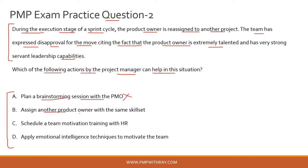Option B: assign another product owner with the same skill set — let's hold this for now. Option C: schedule a team motivation training with HR — that is quite random and too broad. If your team is facing a problem and instead of going into the situation yourself, you are calling HR to motivate them, this is a non-pragmatic approach. Scheduling a team motivation training with HR doesn't specifically address the situation described, so option C is incorrect.